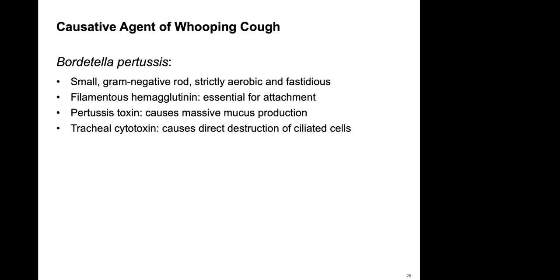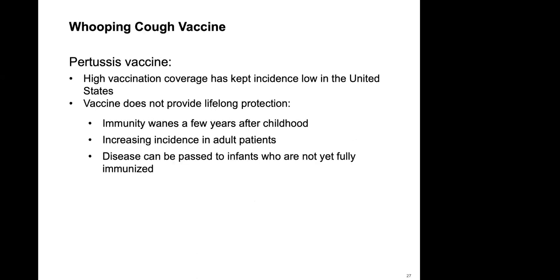The causative agent of whooping cough is Bordetella pertussis, which releases a pertussis toxin causing massive mucus production, and a tracheal cytotoxin causing direct destruction of ciliated cells. There is a pertussis vaccine as part of the DTaP or Tdap booster for ages 11 to 64. We do have high vaccine coverage, but pockets exist and we do see outbreaks of whooping cough occasionally in the adult population.